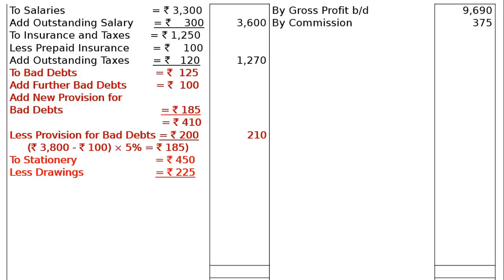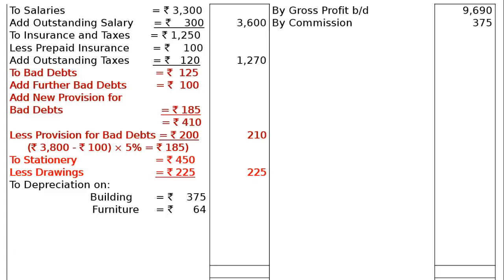The final column for stationery is rupees 225. Then depreciation: building 5% on rupees 7,500 is rupees 375, and furniture 10% on rupees 640 is rupees 64.